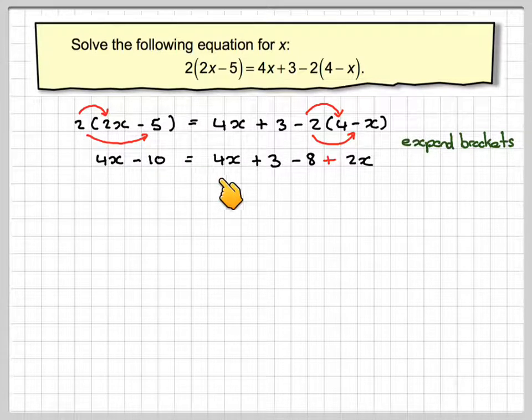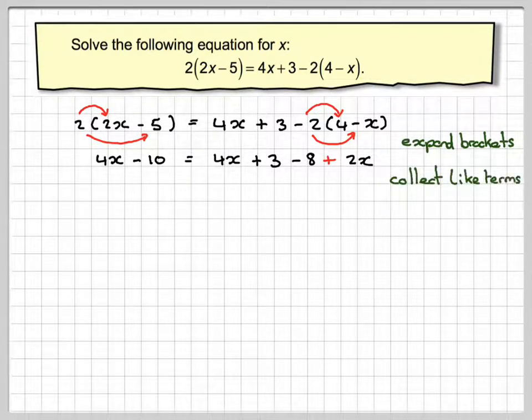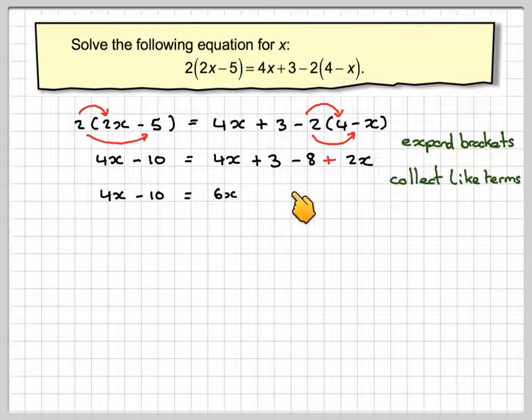At this stage, it will be a good idea on the right hand side here to collect up all the like terms. This side will still be 4x minus 10. Here we've got 4x plus 2x which gives me 6x. And then plus 3 minus 8 which gives me minus 5.